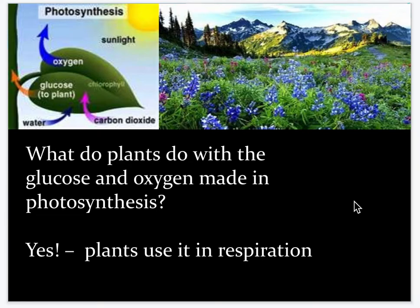When plants make oxygen and sugar at the end of photosynthesis, a lot of the O2 is given off to the atmosphere for later use — and most animals like us use it. The sugar is stored for the plant's own use in cell respiration when it's dark. Plants carry out cell respiration because the ATP made during photosynthesis is only enough to fuel the Calvin cycle — plants need cell respiration to make enough ATP for other activities.